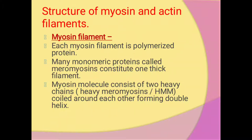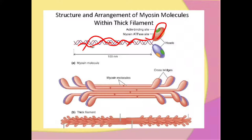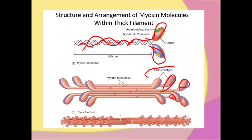In the myosin molecule there is a double helix structure. This is known as heavy meromyosin. At one end of each of the two chains, the chain is projected outward, and this end is folded into a globular protein mass called the myosin head. This projected part, projected outwardly, is called the cross bridge.